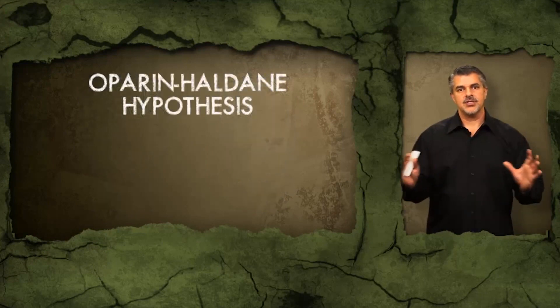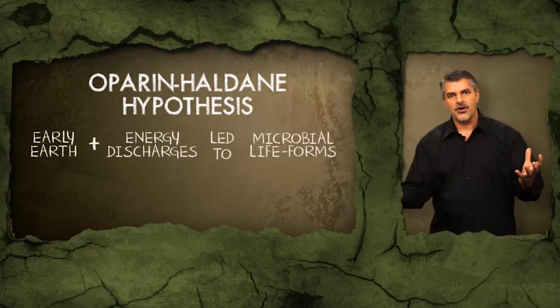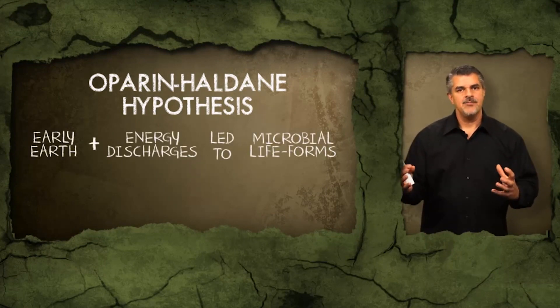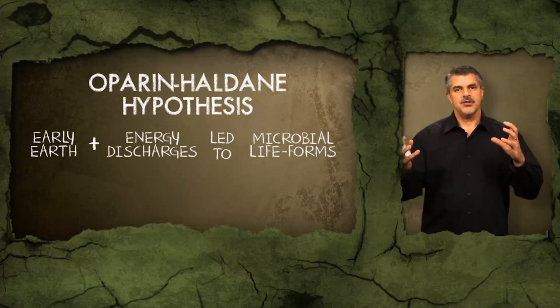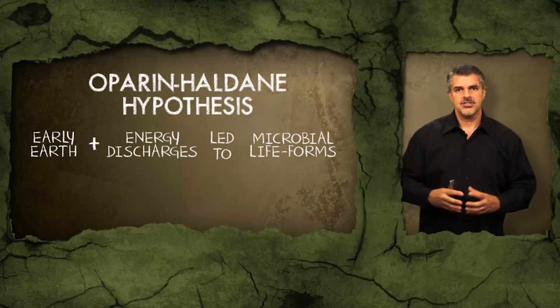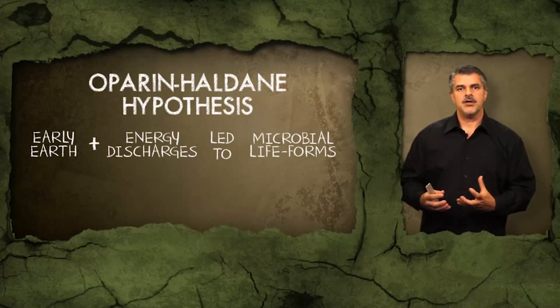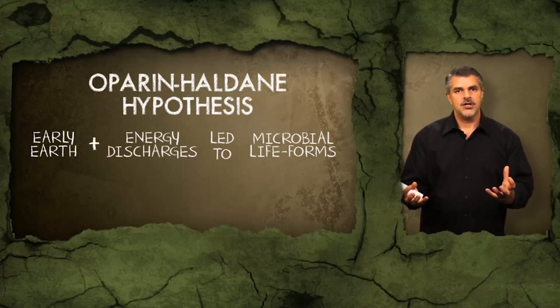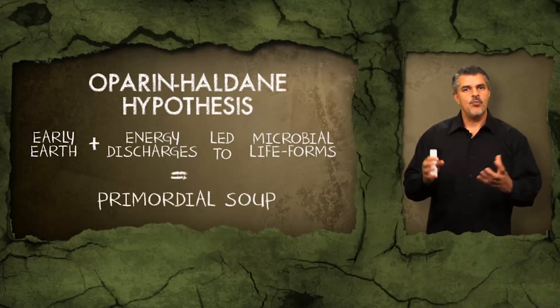Alexander Oparin, a Russian biochemist, and JBS Haldane, a British geneticist — also known as the Oparin-Haldane hypothesis. The idea is that on the early Earth, the environment was very different than today. Simple chemical materials underwent chemical transformations stimulated by energy discharges like lightning in the atmosphere, driving the production of small organic materials that accumulated in the Earth's oceans to form a primordial soup.